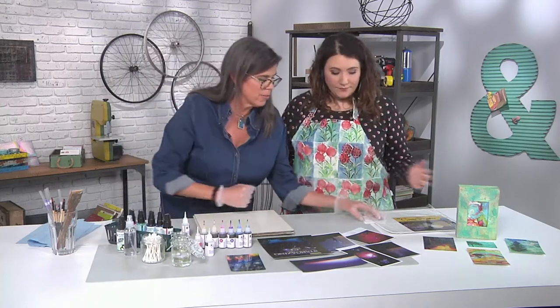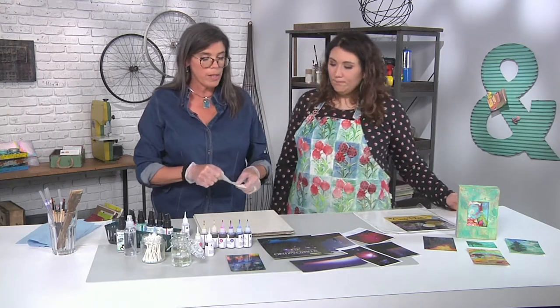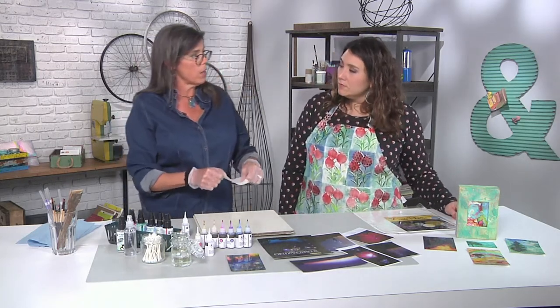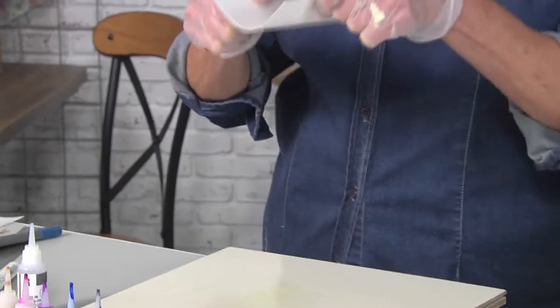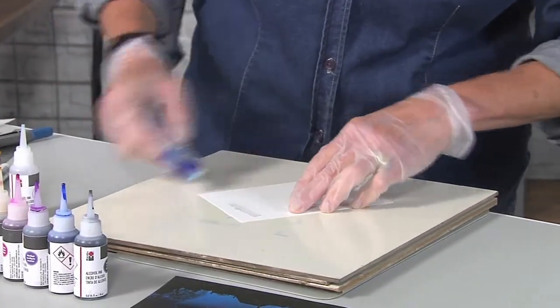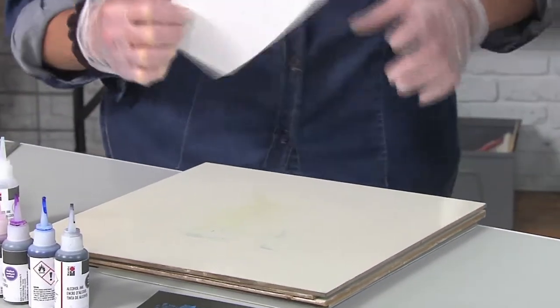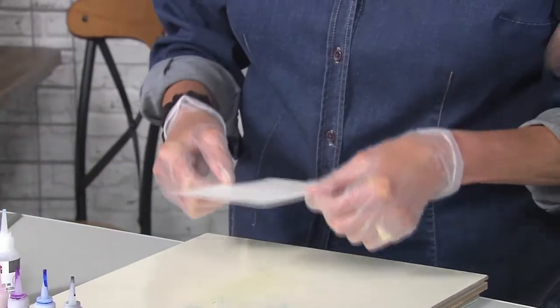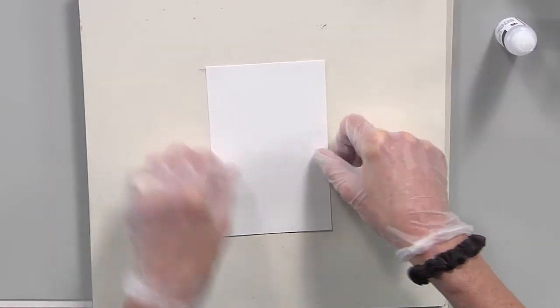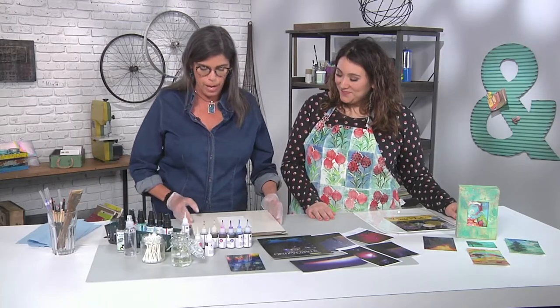So how do we get started? I'm going to use the opaque white craft film. One of the things we're going to use to move around the alcohol is gravity. Since this is flexible, I want to adhere it onto a rigid support with some double sided tape. It's just a temporary thing. Obviously because it's craft film, it's basically plastic. When you work with alcohol ink, you want something non-porous, which gives you some really fun options as far as blending and spreading.